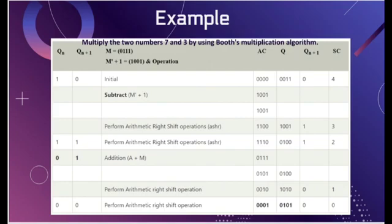Now we draw a table with columns for accumulator AC, Q, Q(n+1), and cycles. We initialize AC at 0 as stated previously, Q equals 0011, and Q(n+1) is 0. We then check the last digits: Q0 is 1 and Q(n+1) is 0. Since we have 1 and 0, we subtract — performing A plus negative M.